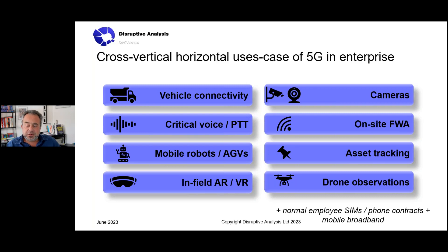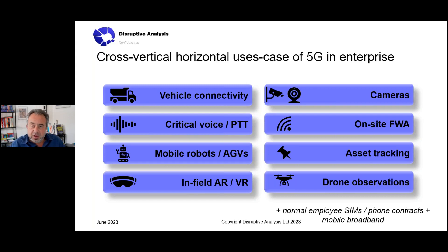Critical voice and push-to-talk is one of those things that gets overlooked, perhaps because a lot of legacy private radio uses fairly unusual technologies to most people in the telecoms industry — things like TETRA, P25, DECT, and others. Many of those are quite expensive and niche, and some systems are coming to end of life, which is a major driver for 4G adoption and now increasingly 5G as well.